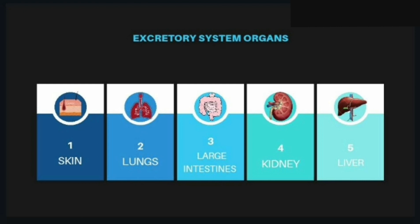Third, large intestine. The large intestine does the job in both the digestive system and the excretory system. It performs absorption of water and other nutrients, and produces feces as a waste product. Bilirubin from the liver will give color to the feces. The large intestine consists of simple columnar epithelial tissue.